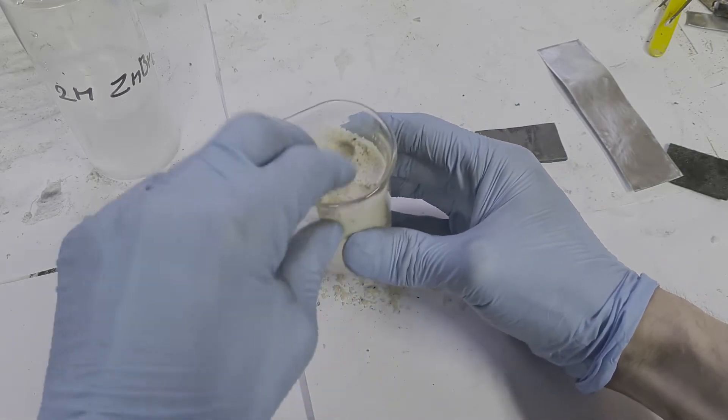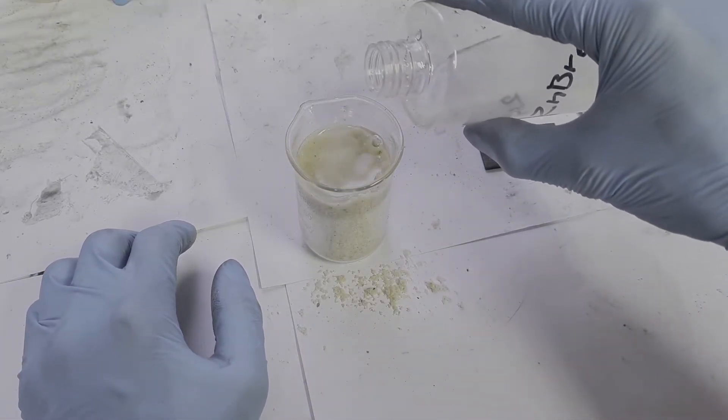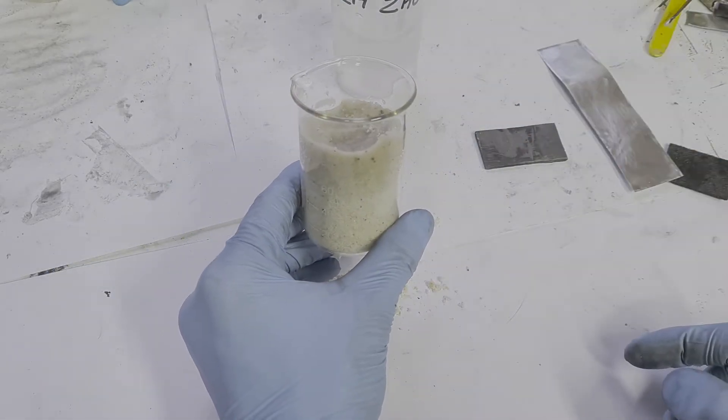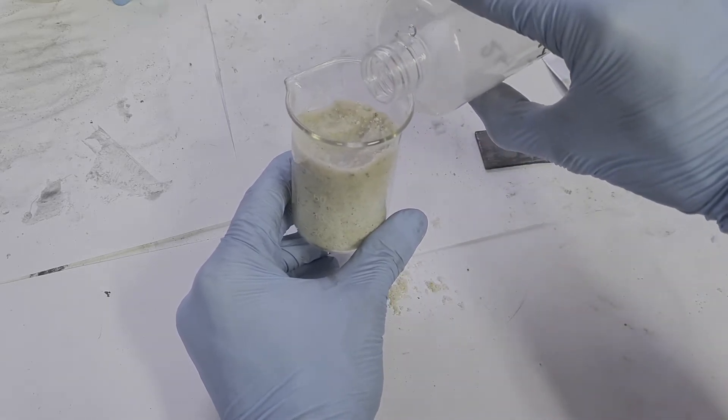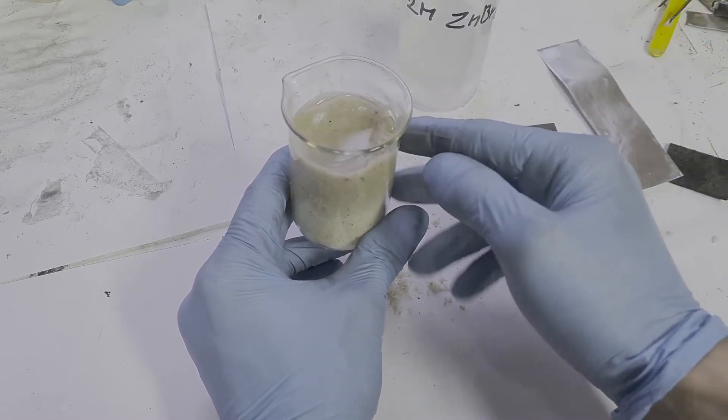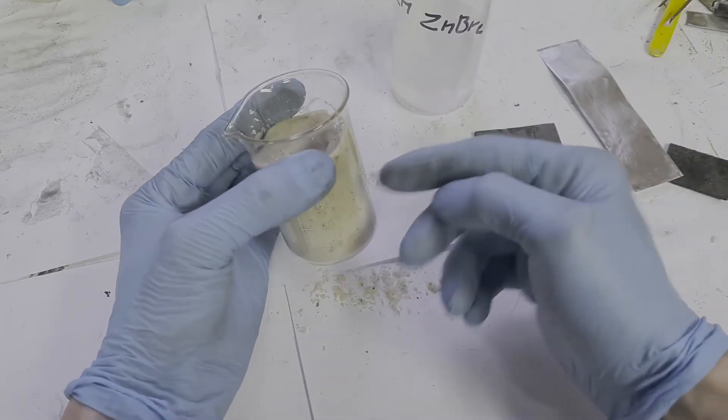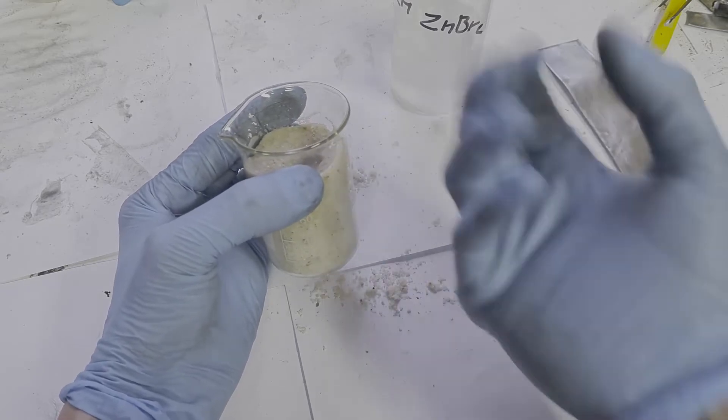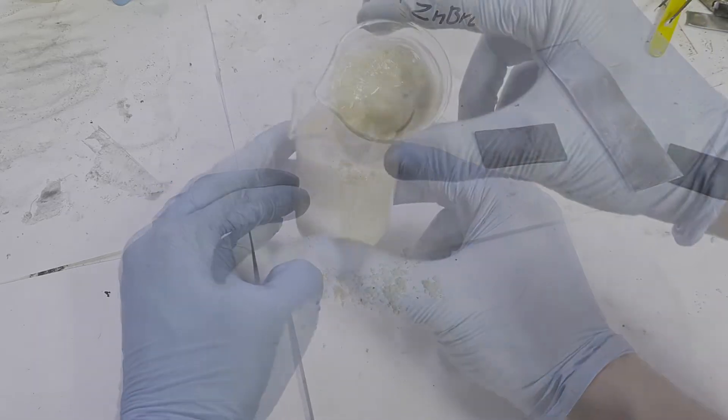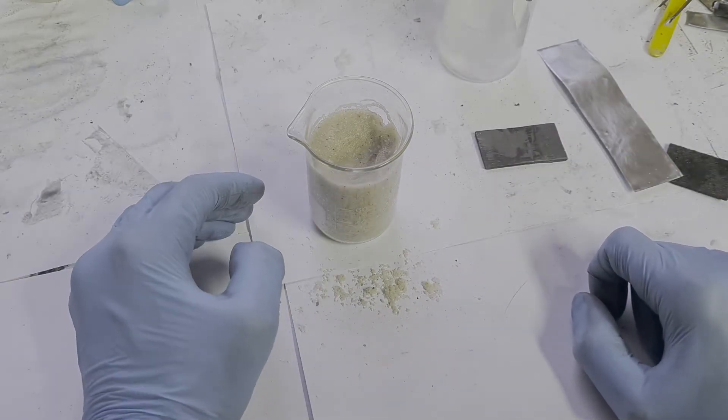So I fill this cup with sand. And now I will fill this cup with two molar zinc bromide. And you see how the sand soaks this electrolyte. So this way you will get a little bit more safer zinc bromide cell.